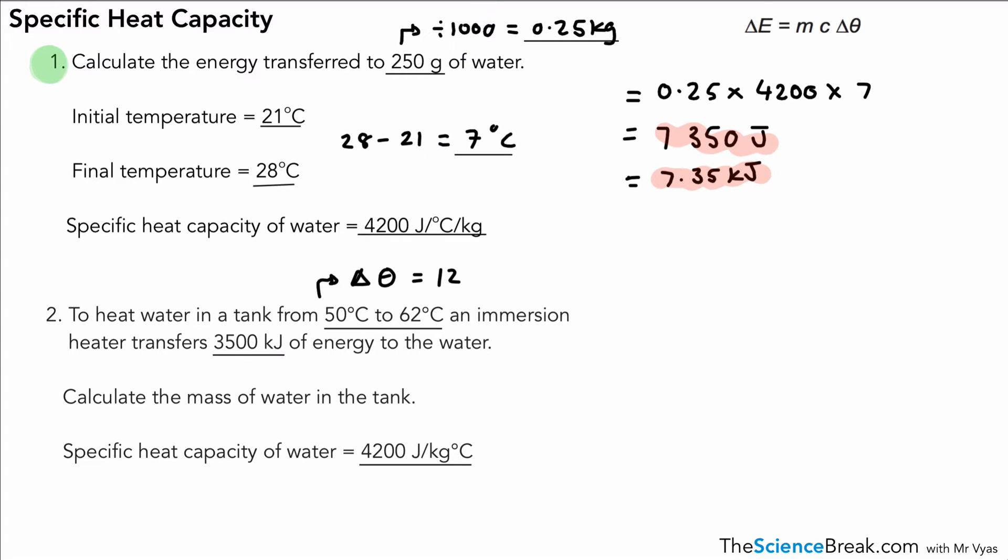We've got another tricky bit here: we've got 3500 kilojoules, which is the heat transferred, so we have to convert that into joules. So that would be 3.5 million—just multiply 3500 by a thousand to find out the joules. And then we've got to calculate the mass of water, so that means we've got to rearrange our equation.